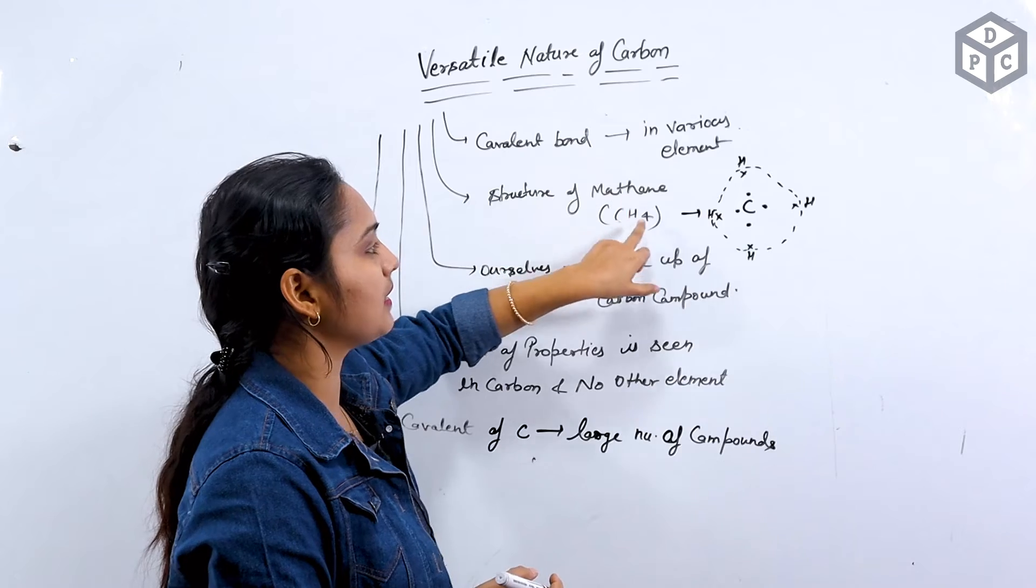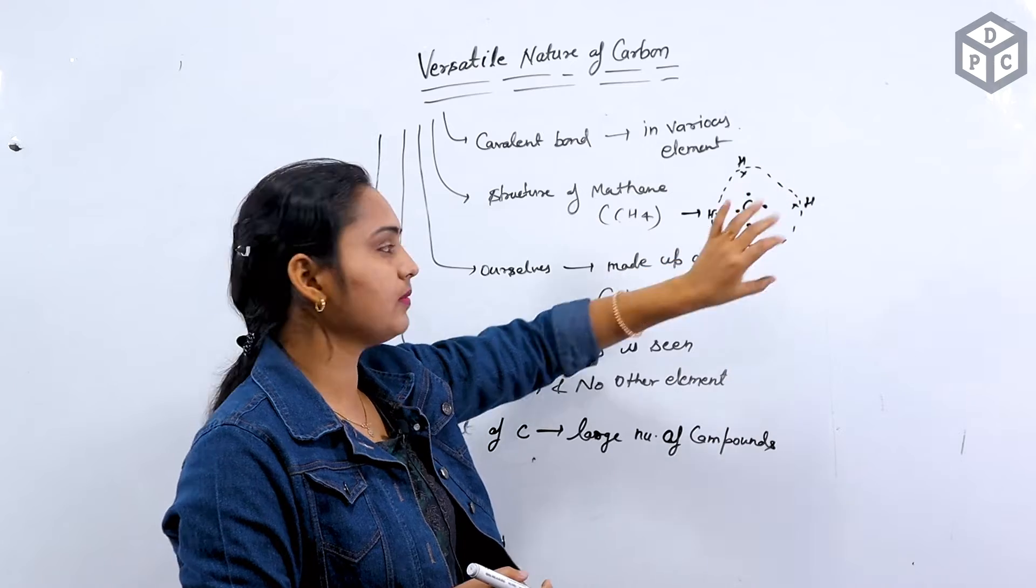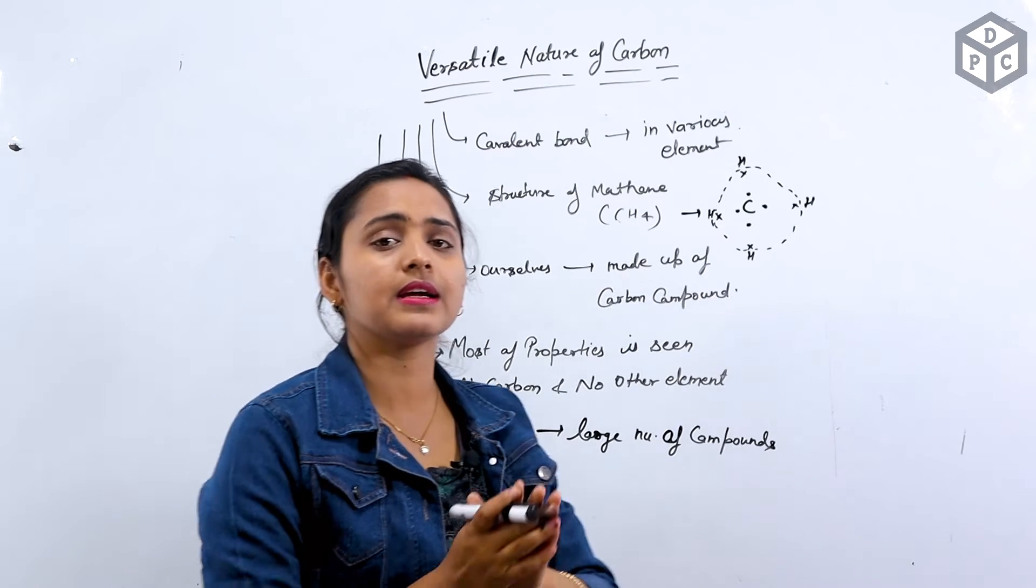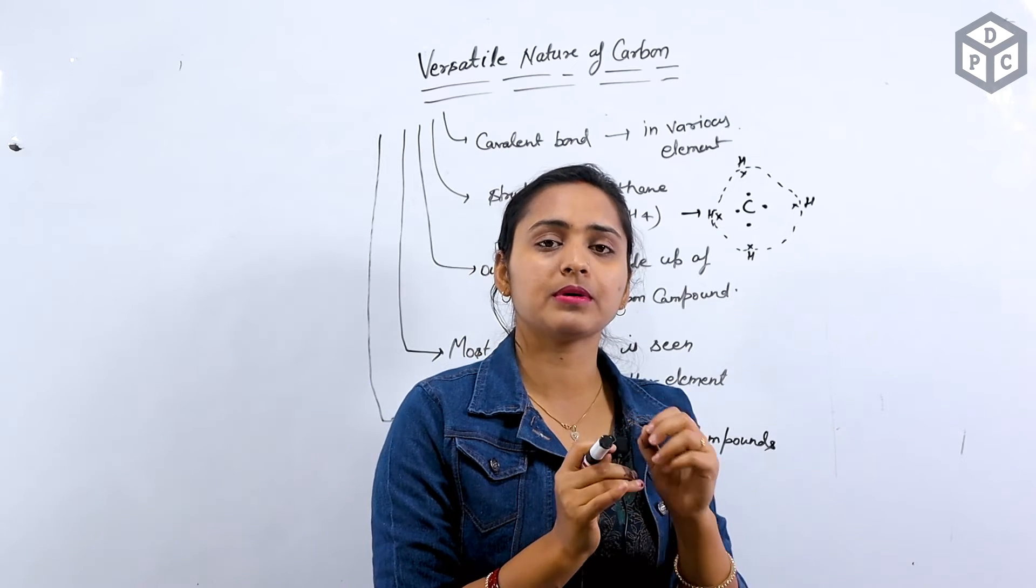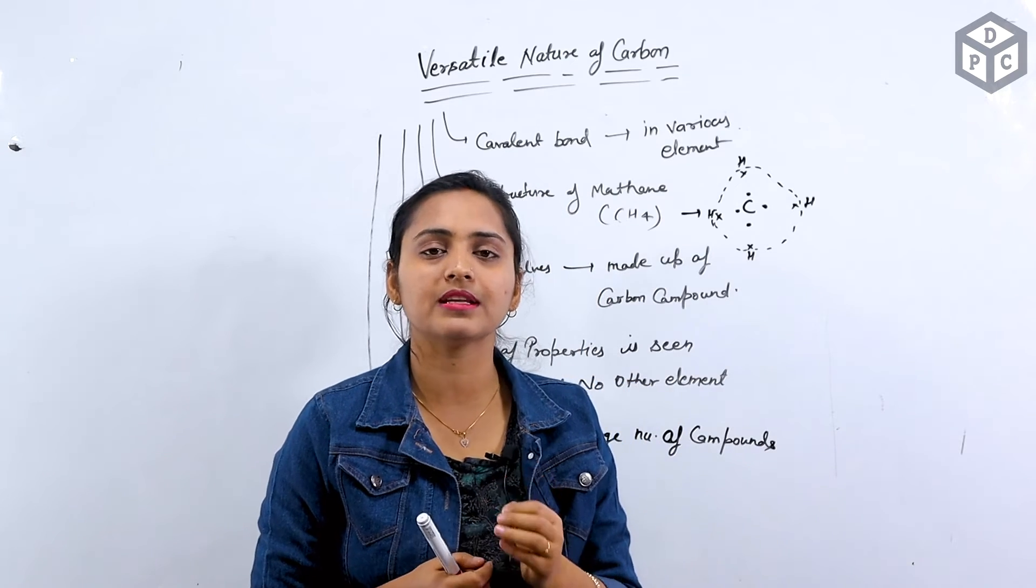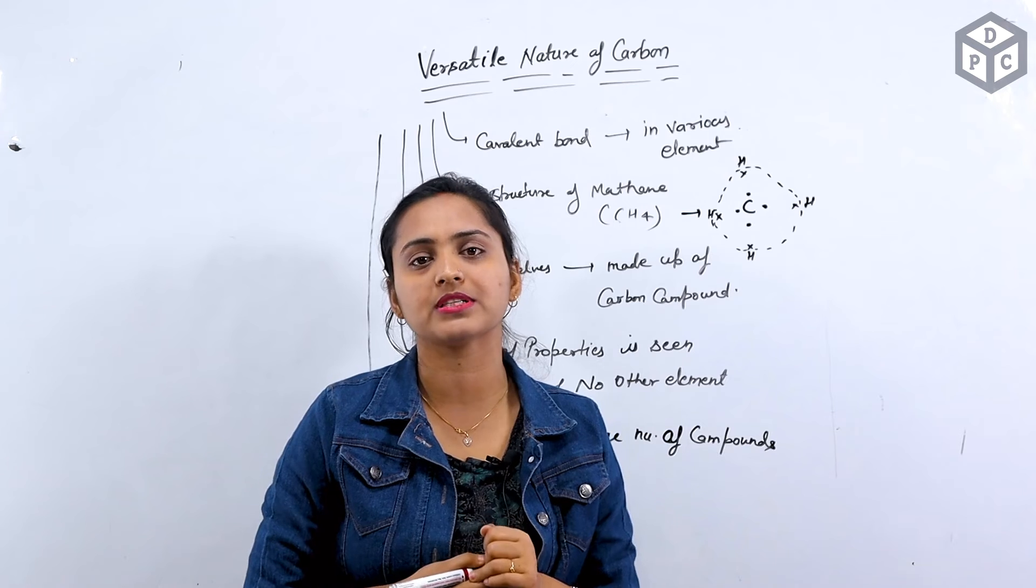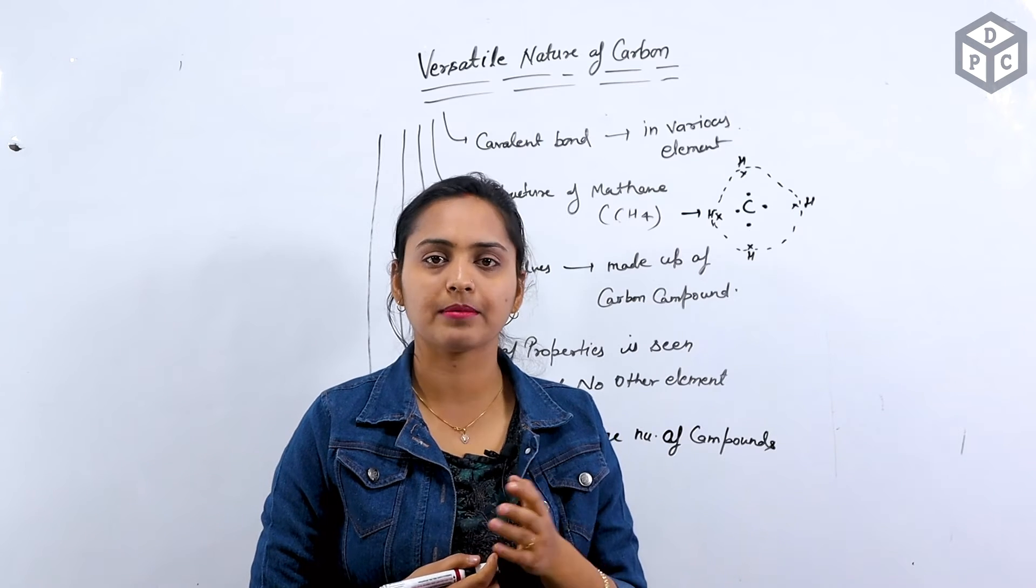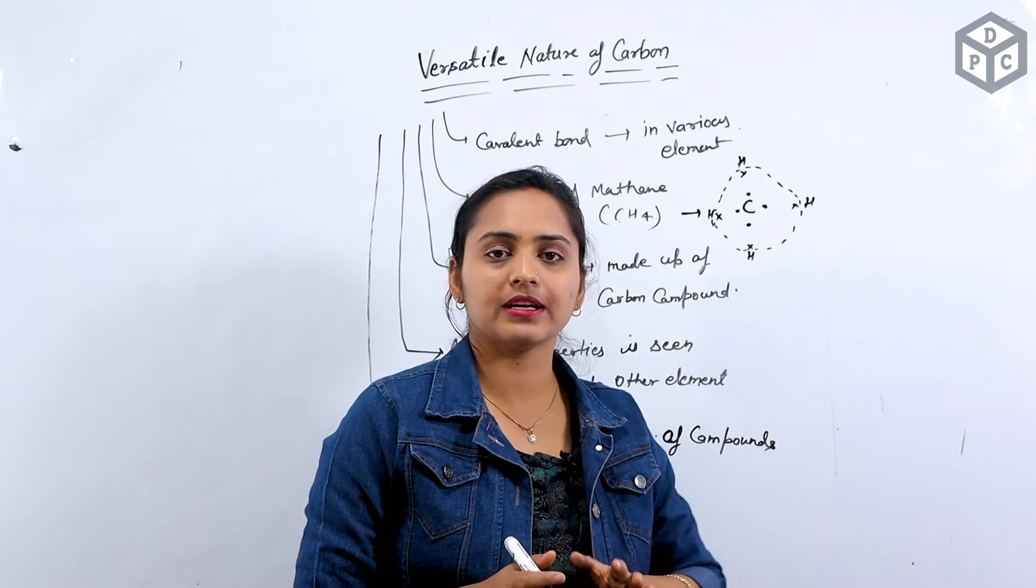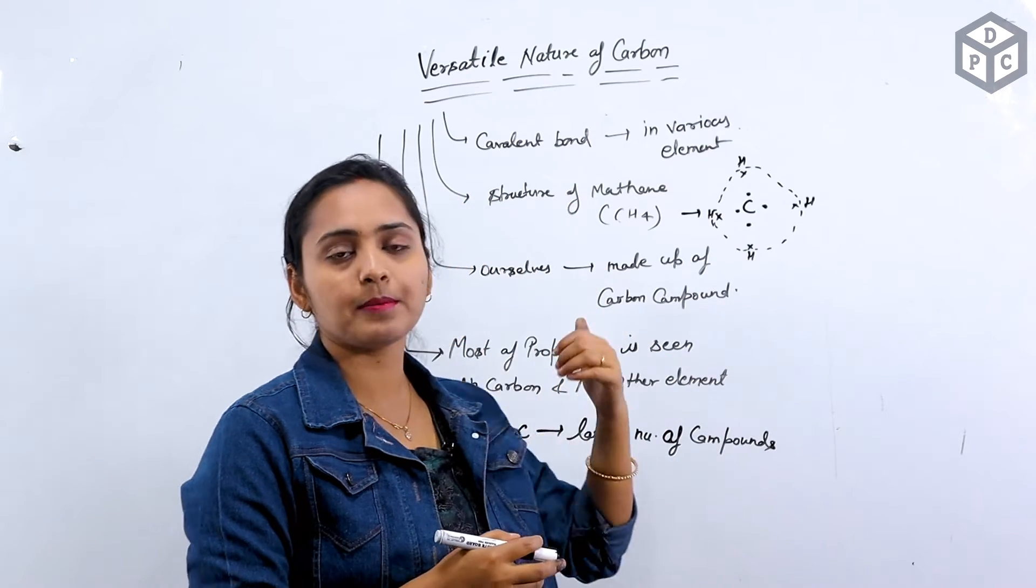The structure of methane had been done. The whole covalent bond system has been done. Now, the carbon compounds are made up. Carbon is more than just the compound. We also have some compounds such as glucose. The carbon is in a very large amount in every place, in the organism, so it will be found in us.